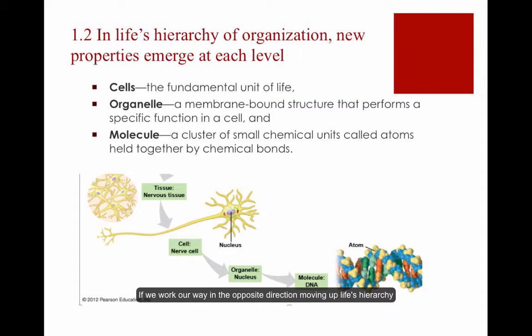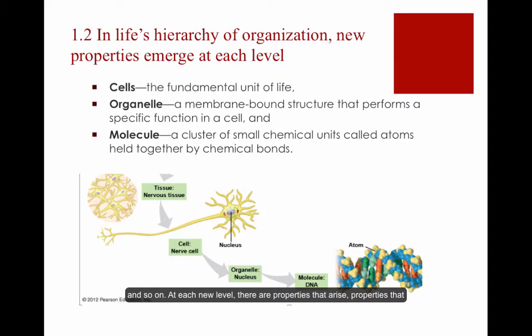If we work our way in the opposite direction, moving up life's hierarchy from molecules to the biosphere, it takes many molecules to build organelles, numerous organelles to make a cell, many cells to make a tissue, and so on. At each new level, there are properties that arise — properties that were not present at the preceding level. Those are called emergent properties. The emergent properties of each level result from the specific arrangement and interaction of its parts.